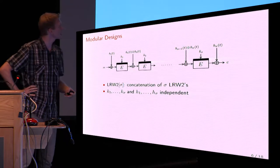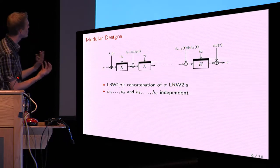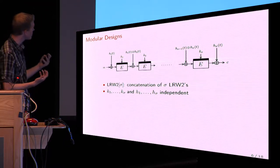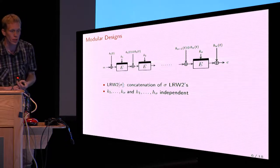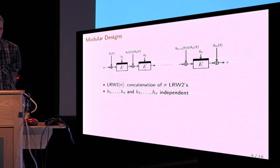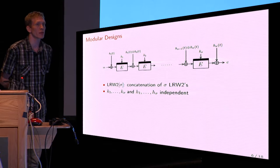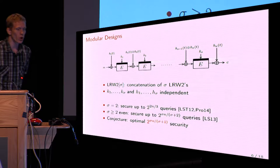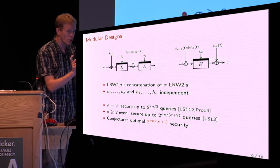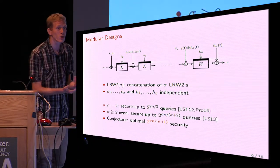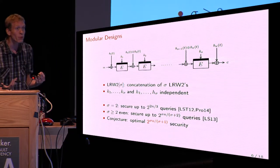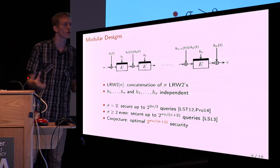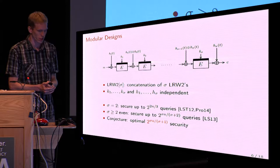So what we look for is a scheme that achieves security beyond the birthday bound — beyond 2^(n/2) security. A notable way to do this is to glue together various evaluations of LLW2 in a cascade of sigma evaluations, with independent keys and universal hash function calls. At Crypto 2012, Landecker et al. proved that if you glue together two evaluations, this construction achieves security up to 2^(2n/3), so beyond birthday bound security. There was a small flaw fixed by Proctor, but in the end we know that two cascaded instances give 2^(2n/3) security.